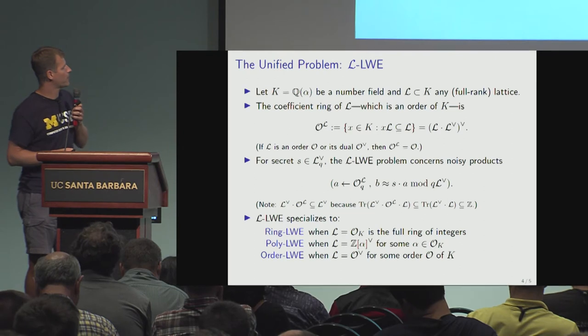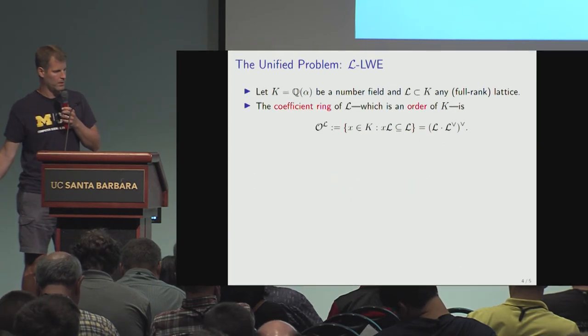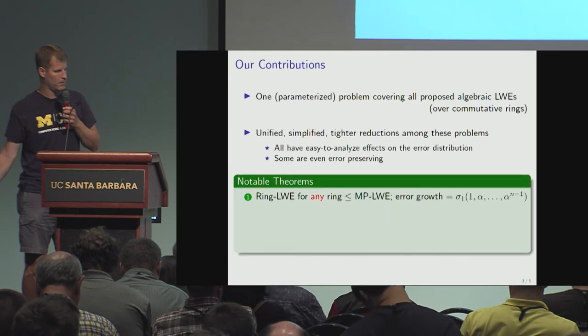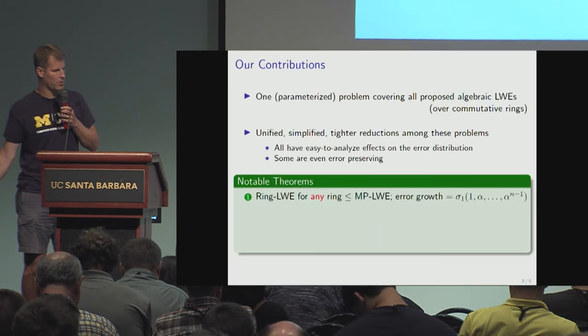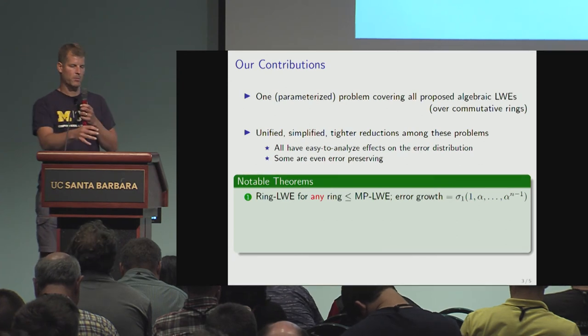The second theorem relates to—I'll just go back to the summary of that theorem. Notable theorem number one says you can go from ring LWE to middle product LWE.